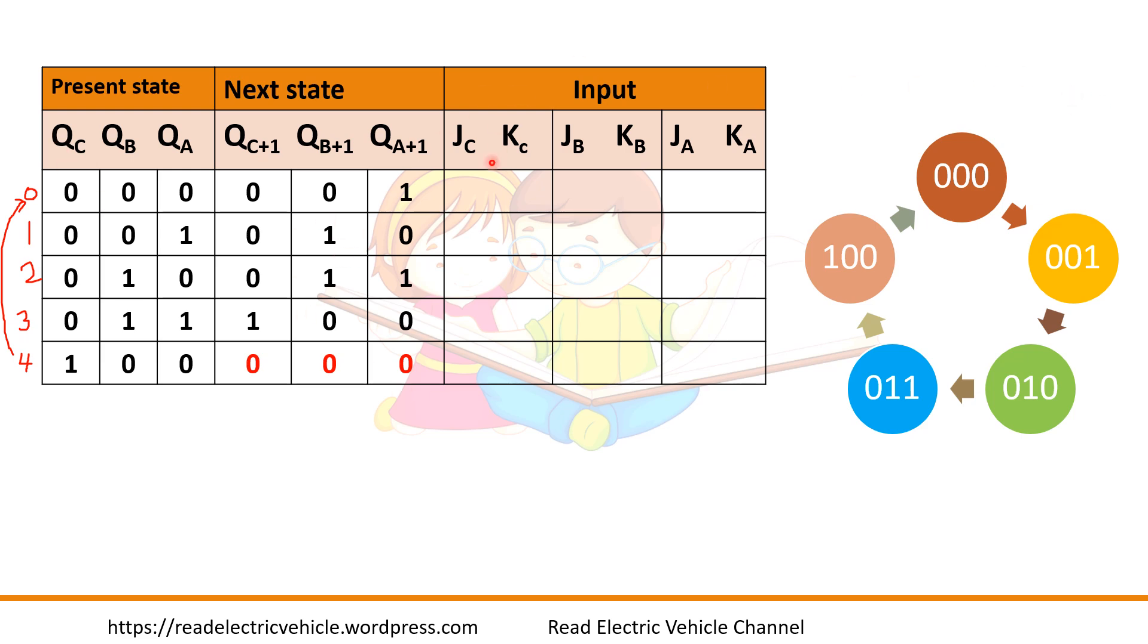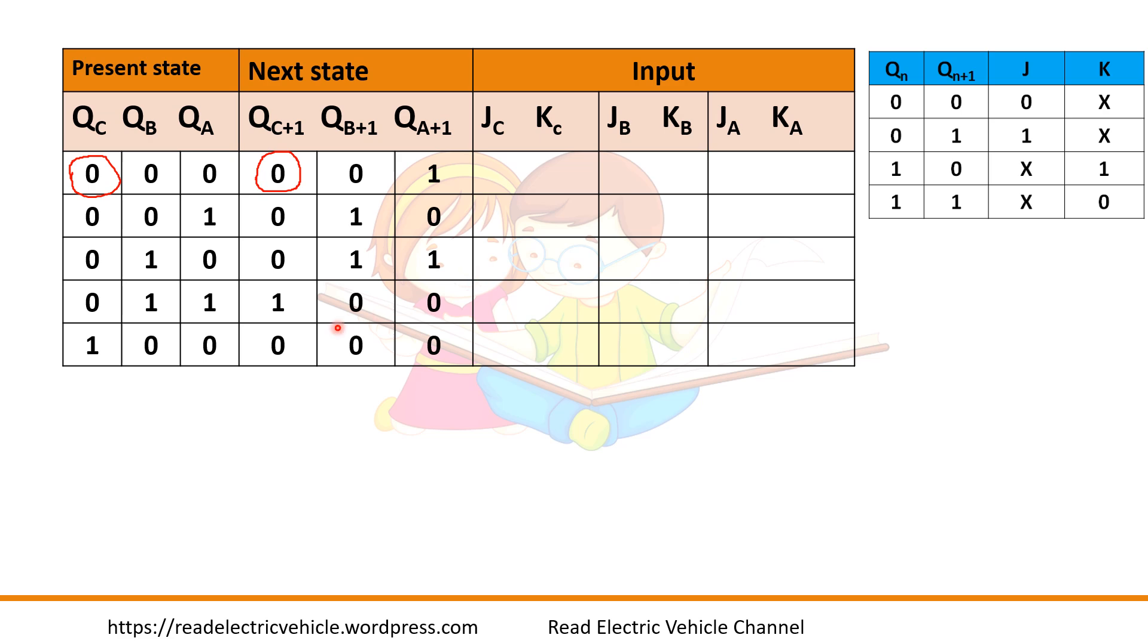From the excitation table we can fill the input. So first take C flip-flop. QC, QC plus 1 is 0, 0. So it is similar to QN, QN plus 1. Here 0, 0. When you have 0, 0 here, what should be JC and KC? 0, X. So write 0, X.